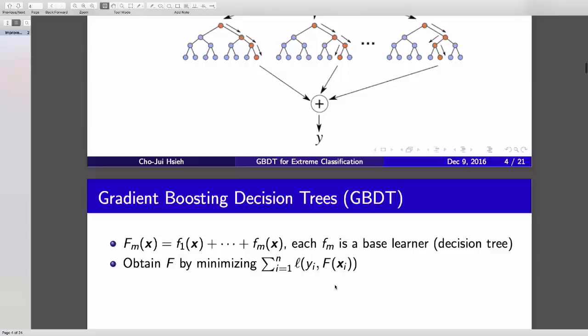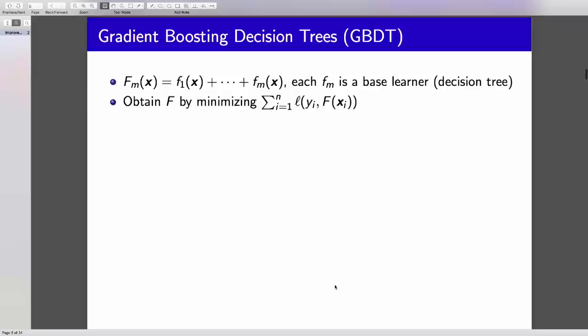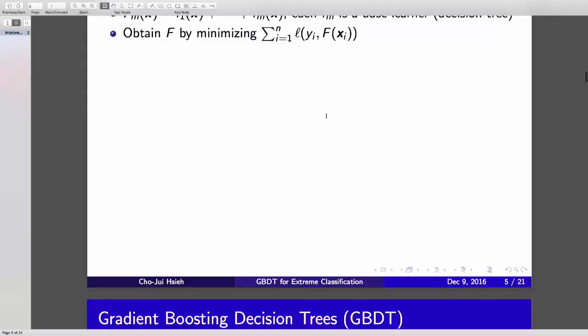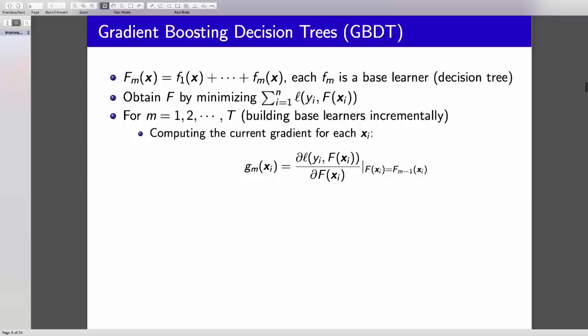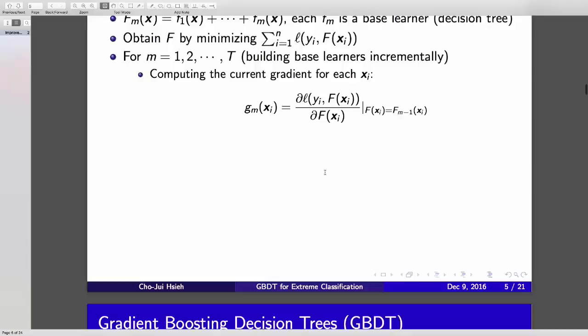Let's give some background about gradient boosting decision tree. In this algorithm, you try to learn an ensemble of trees. We define small f to be the base learner. Each one is a decision tree, and capital F is a combination of f1 plus f2 to fm. Our goal is to obtain the ensemble tree capital F by minimizing the loss defined on training data. To do this GBDT, each iteration, you first compute the current gradient of each training data.